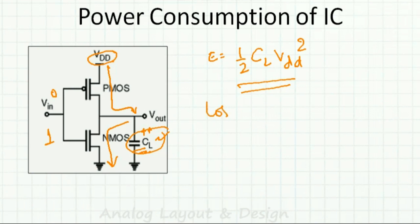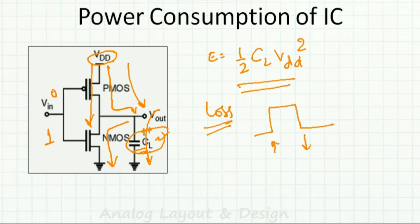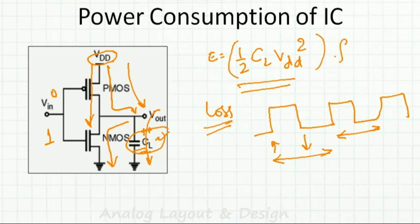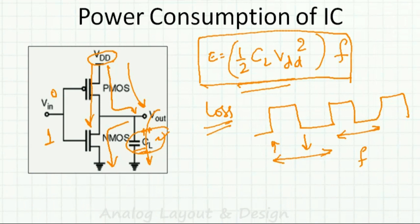Instead of going directly from VDD to ground, the energy came to the capacitor first and then discharged to ground. For every switching cycle — low to high and high to low — there is this power wastage. With continuous switching at frequency F, the power wastage becomes ½CV²F.